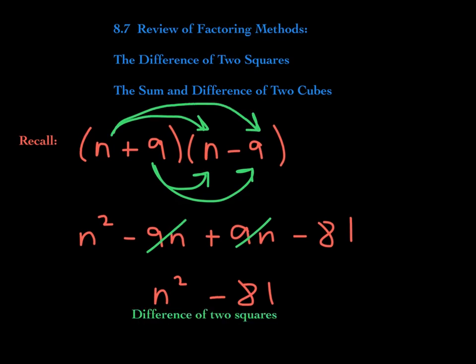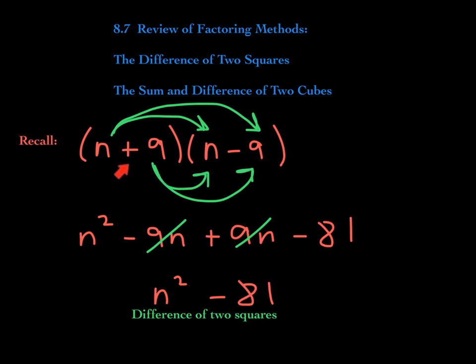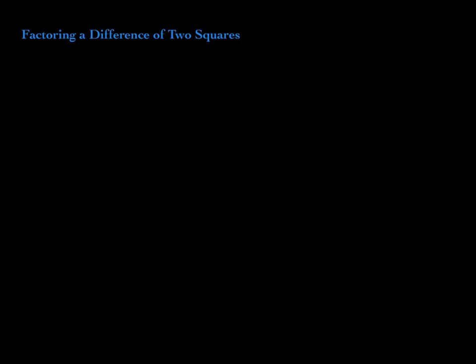So let's work backwards. If I give you a difference of two squares — this is a difference because it's a subtraction — n squared is a perfect square, and 81 is a perfect square because it's 9 times 9. How does it factor? Look at how it factored in the beginning: n plus 9, n minus 9. If this is n squared, then an n goes in each factor. 81 — what number squared gives you 81? 9. So 9 goes there and there. Notice that the signs are opposites. Here is the pattern we will follow.